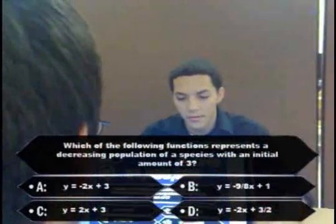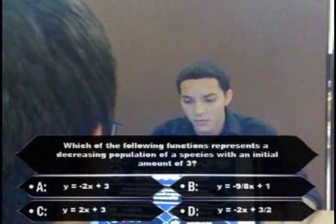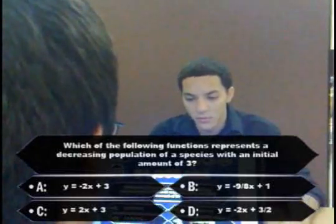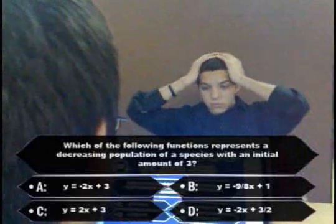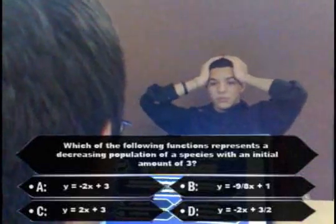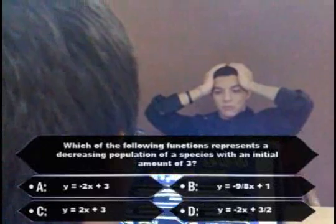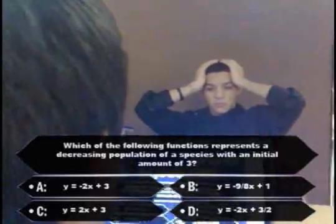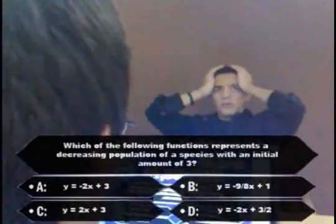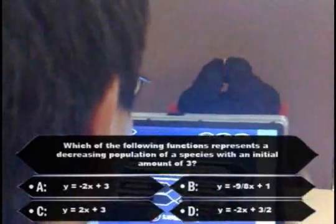Which of the following functions represents a decreasing population of a species with an initial amount of 3? A: y equals negative 2x plus 3. B: y equals negative 9 eighths x plus 1. C: y equals 2x plus 3. Or D: y equals negative 2x plus 3 halves.